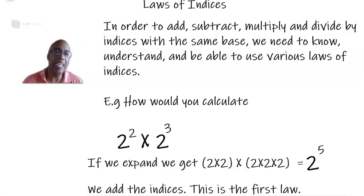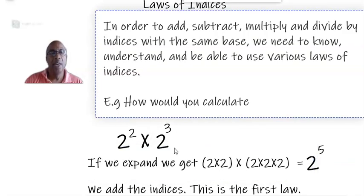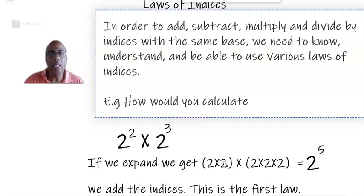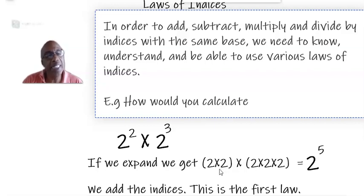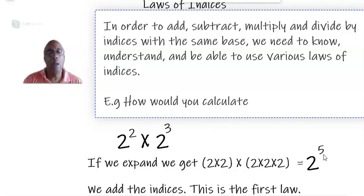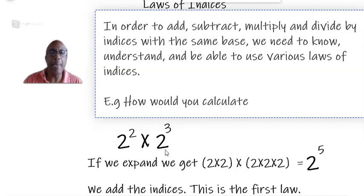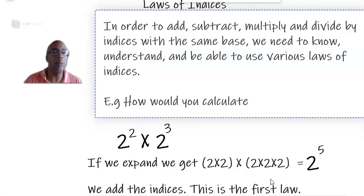To understand that law, let's do it the long way. If we multiply 2 squared by 2 cubed — 2 squared, if we expand it, we get 2 times 2, and 2 cubed gives 2 times 2 times 2. So 2 squared times 2 cubed is the same as multiplying 2 by itself 5 times, or 2 to the power of 5. It means we could have just added the indices to get the new index in the answer. 2 squared times 2 cubed is 2 to the power of 2 plus 3, which is 5.